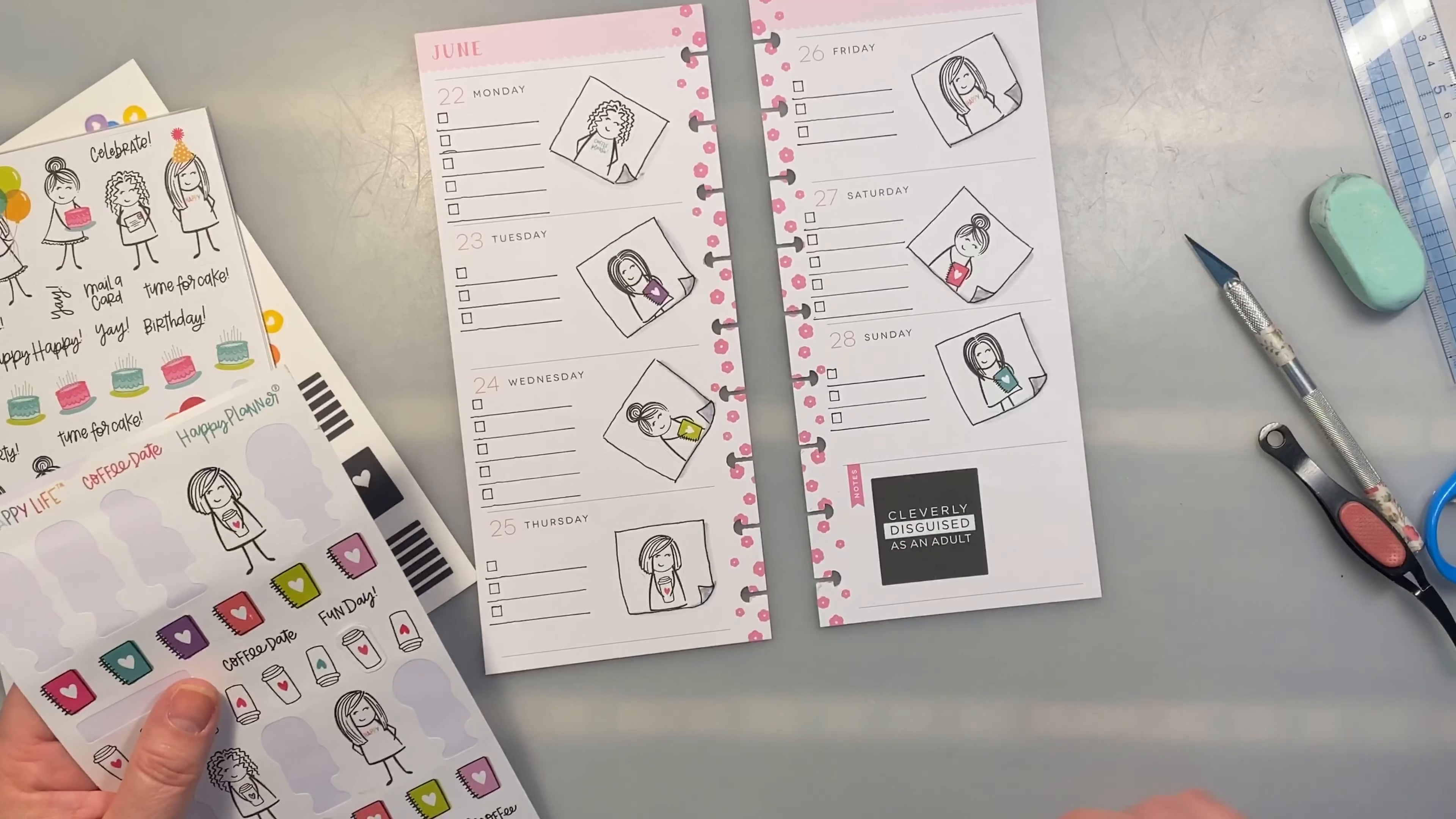Then we need to find something for down on the bottom here. What else do we have in here? Maybe something from Sassy Plans. Let's see if there's something about planning. Probably not. And something that would fit.